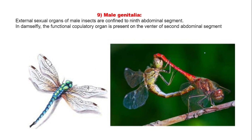Male genitalia: the external sex organs of male insects, which are confined to the ninth abdominal segment, are known as male genitalia. In dragonfly and damselfly, the functional copulatory organs are present on the ventral side of the second abdominal segment, but generally in almost all insects the functional copulatory organ is present on the ventral side of the ninth abdominal segment.